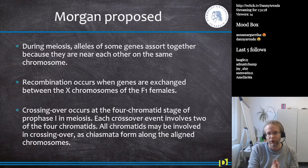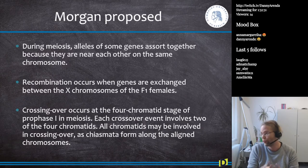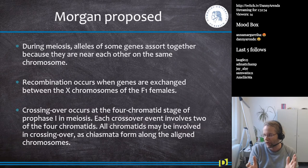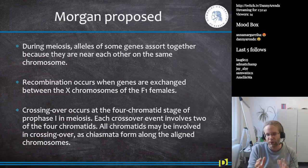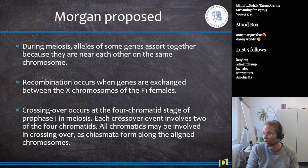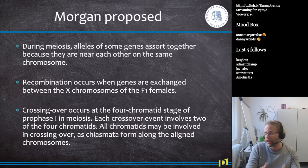Crossover occurs at the four-chromatid stage of prophase one in meiosis — we know this now, of course, but Thomas Hunt Morgan had no idea about this. All chromatids may be involved in crossing over as chiasmata form along the aligned chromosomes. This is the invention that Thomas Hunt Morgan made.